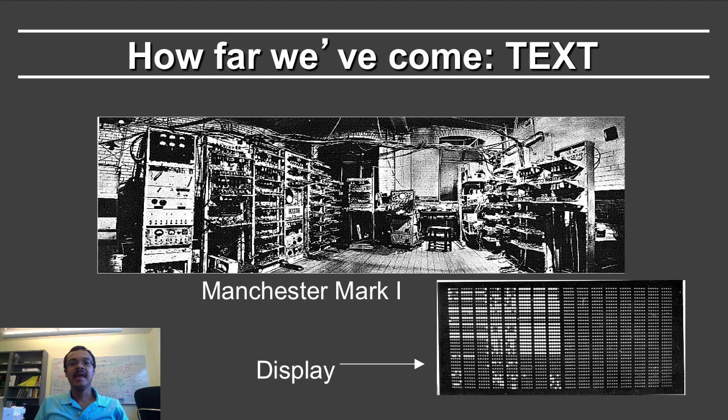One of the interesting things I always like to mention is that text is in itself a major development in computer graphics. If you read Alan Turing's biography, when he was developing the Manchester Mark I, he goes into a lot of detail about the future potential of computers — things like chess-playing machines, even compilers to high-level programming languages — but somehow even the notion of text escapes him. The Manchester Mark I's display essentially had a bank of LEDs, so you're just looking directly at the memory trying to figure out what happens.